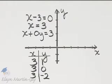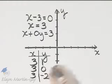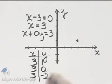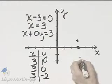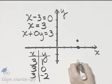Let's plot these ordered pair solutions. 3 to the right, 1 up. 3 to the right, 0 up or down. And 3 to the right, 2 down.